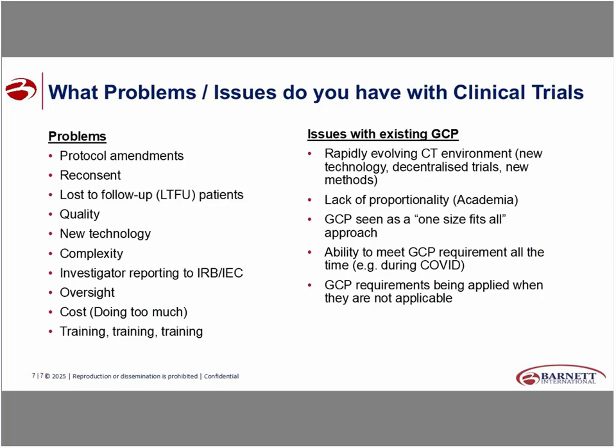The issues include the rapidly evolving clinical trial environment with new technology and decentralised trials, new methods, and a lack of proportionality raised by academia — that was one of the key drivers of change from R2, as academia felt R2 didn't really suit them. GCP has been seen as a one-size-fits-all approach applied to everything at very high cost. There's also the inability to meet GCP requirements at all times — take COVID, when we couldn't get to sites yet had an on-site requirement — and GCP requirements being applied when they're not applicable simply because someone says 'that's how we used to do it.'